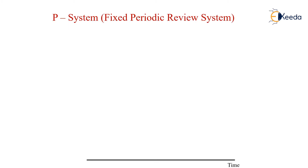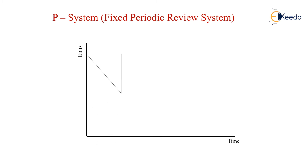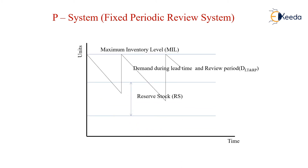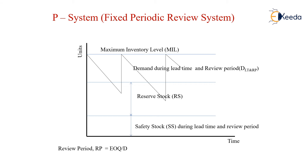In the P-System, like the Q-System, when we plot a graph between the unit and the time, we will have the same safety stock, reserve stock, and the maximum inventory level, with the demand during the lead time and the review period. Based upon which we can say that the safety stock and the reserve stock, along with the demand during the lead time and the review period, is what we can find out in this P-System.